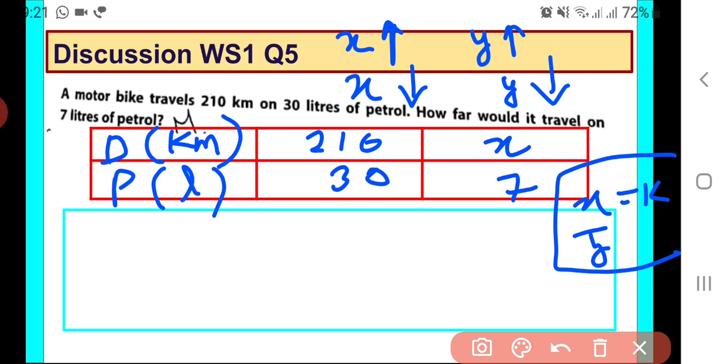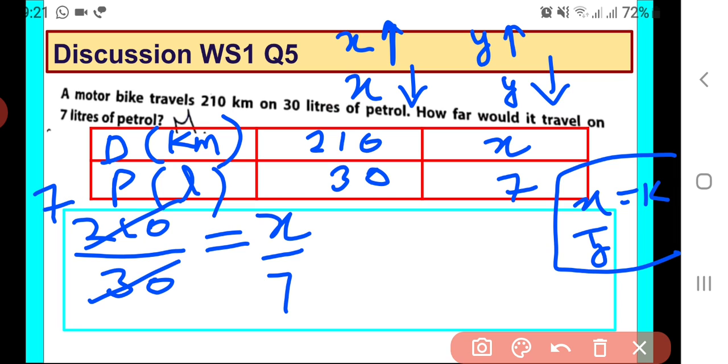We will be using this fact for solving this question. So 210 upon 30 should be same as x upon 7. You can easily simplify this. We get 7 here.